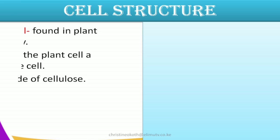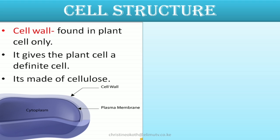The cell wall is only found in plant cells and it gives the plant cell a definite shape and rigidity. It is the outermost layer of the plant cell and it is made of a substance which we call cellulose. So that one is for giving the plant rigidity and a definite shape.